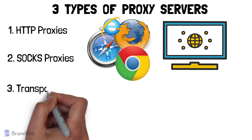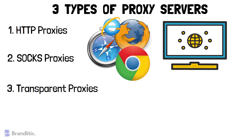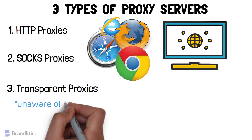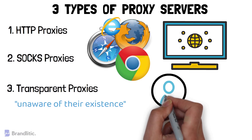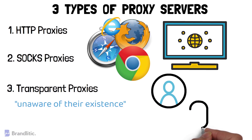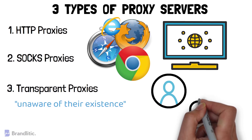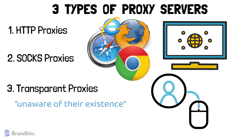Number 3: Transparent proxies. These are a different kind of proxy because their users are usually unaware of their existence. These proxies can be set up by employers or parents who want to monitor users' online activity and block access to specific websites. Hotels and cafes use them to authenticate users on public Wi-Fi, and companies or home users might also set them up to save bandwidth.